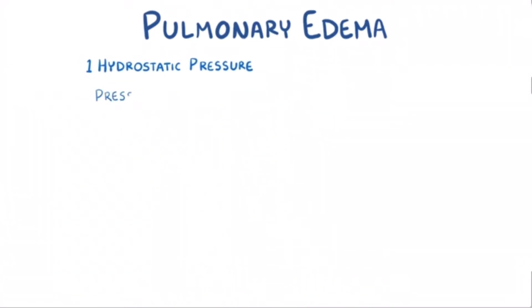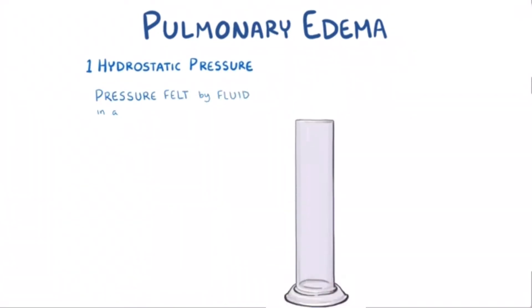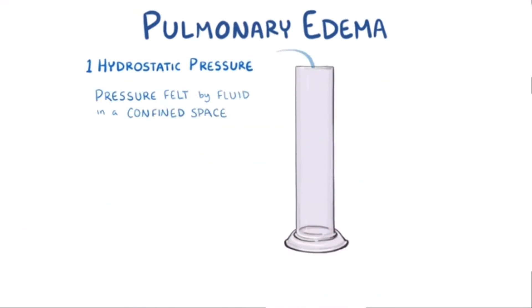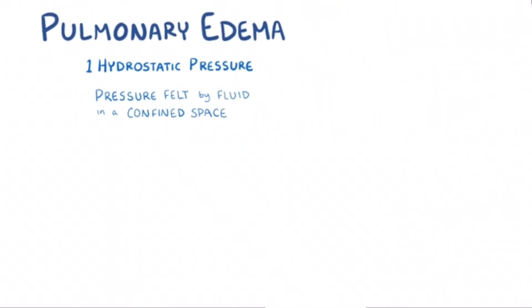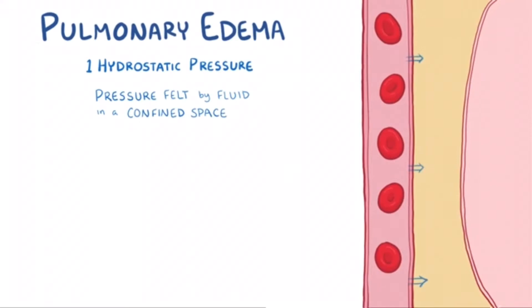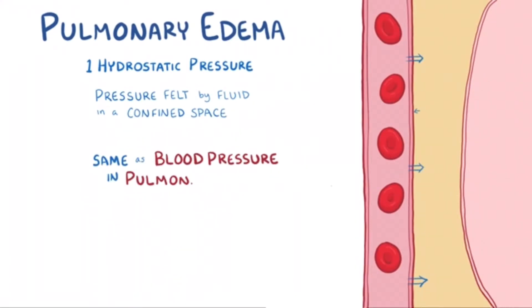Hydrostatic pressure refers to the pressure felt by fluid in a confined space, pushing the fluid out of that space. In the interstitial space, it's the same thing as the blood pressure in the pulmonary capillaries.